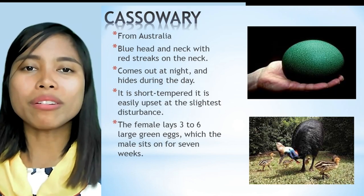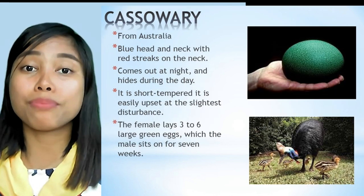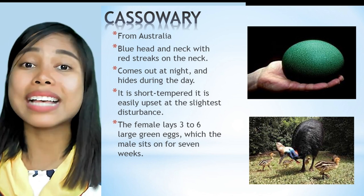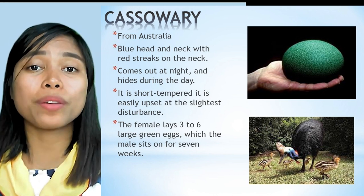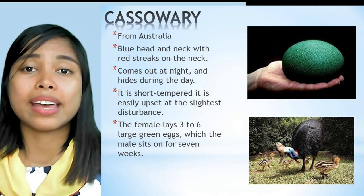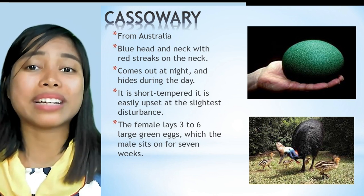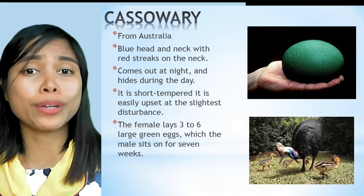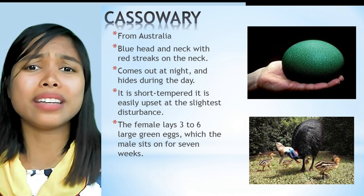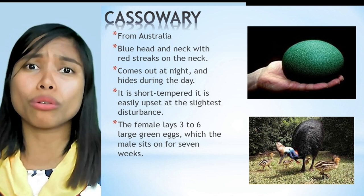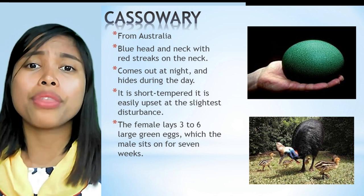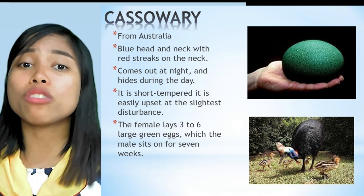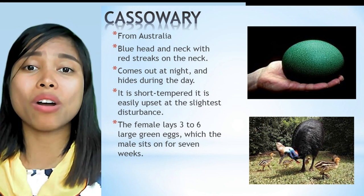The cassowary is a bird that lives in Australia. It has a blue head and neck with red streaks on the neck. It comes out at night and hides during the day. It is short-tempered and easily upset by slight disturbances. The female lays three to six large green eggs, which the male sits on for seven weeks.